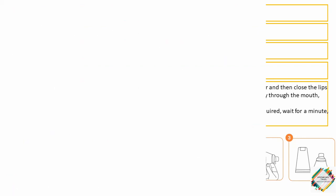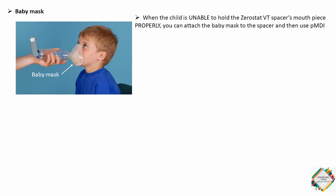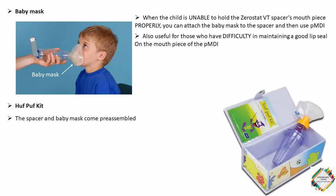The next device is the baby mask. When a child is unable to hold the Zerostat VT spacer's mouthpiece properly, you can attach the baby mask to the spacer and then use the PMDI. It is also useful for those who have difficulty maintaining a good lip seal. The Huff Puff Kit combines the spacer and baby mask in a pre-assembled form, enabling quick delivery of medicine and saving time.